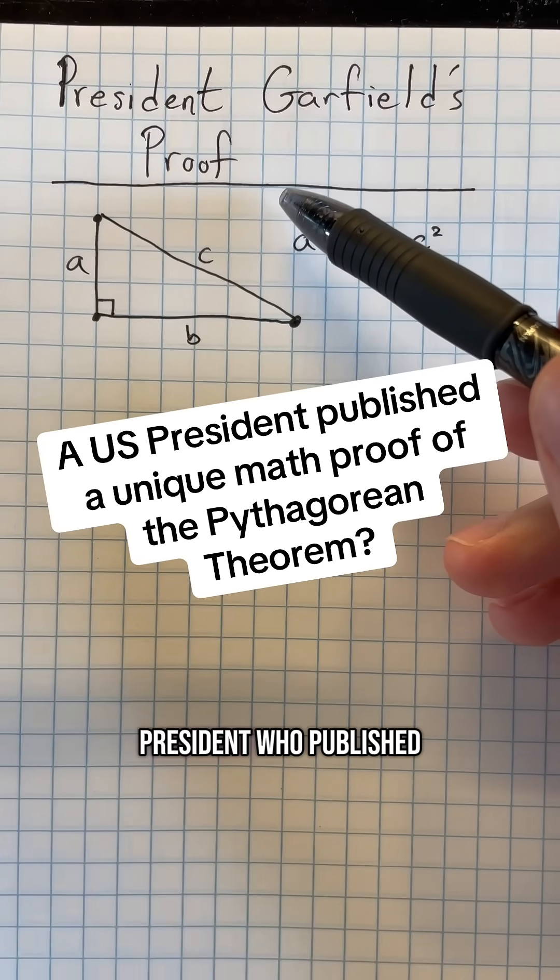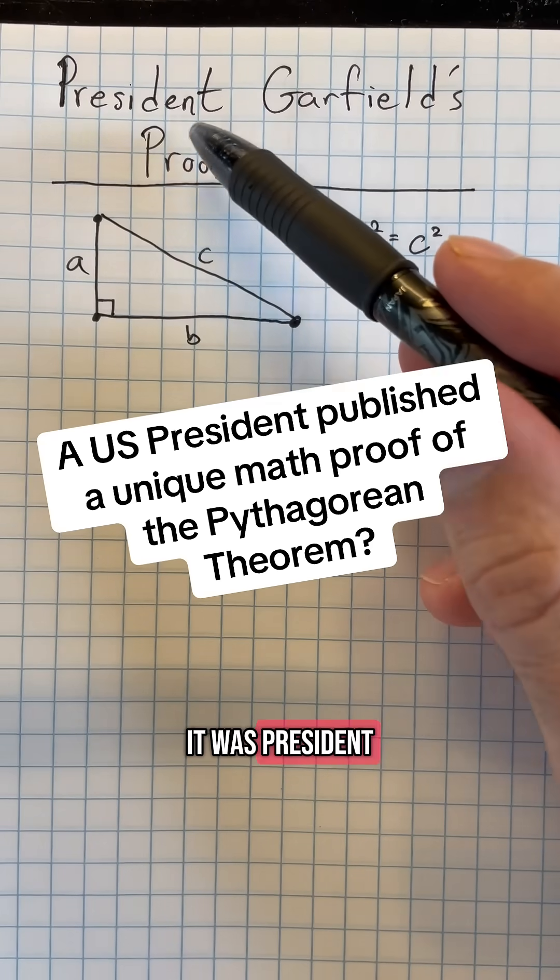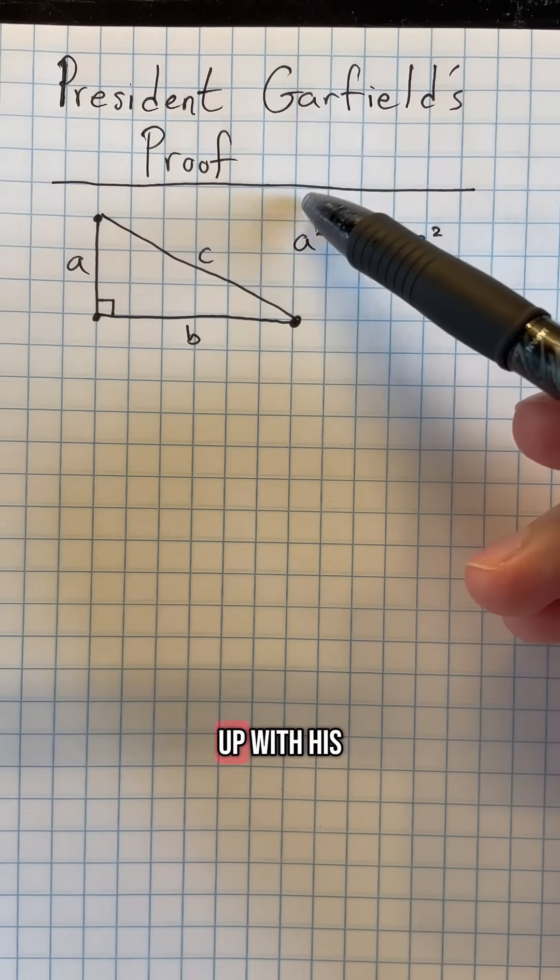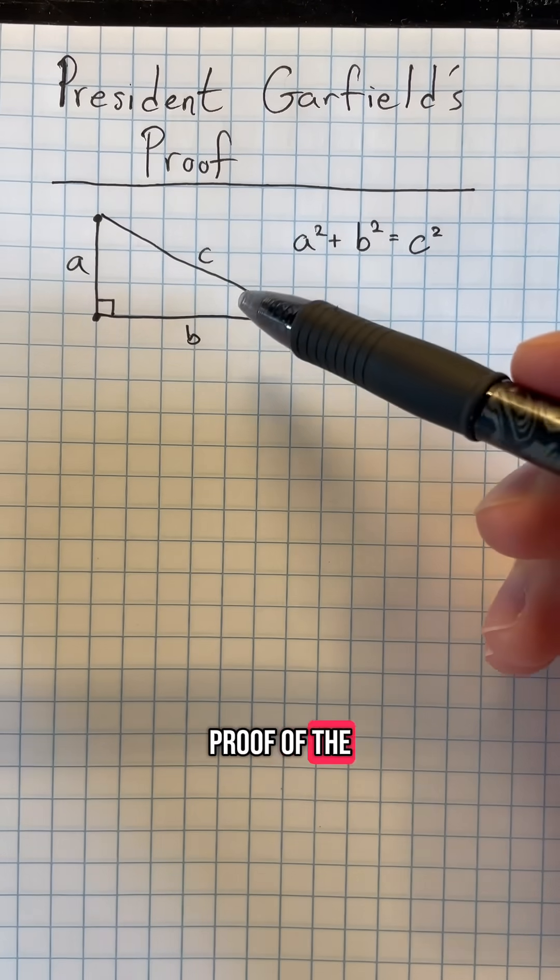Did you know that there was once a U.S. president who published math research? It was President James Garfield, and he came up with his own brand new proof of the Pythagorean Theorem.